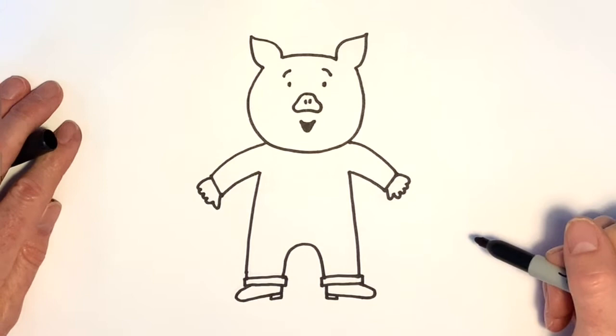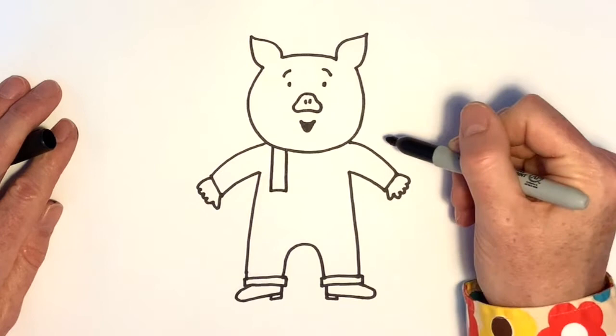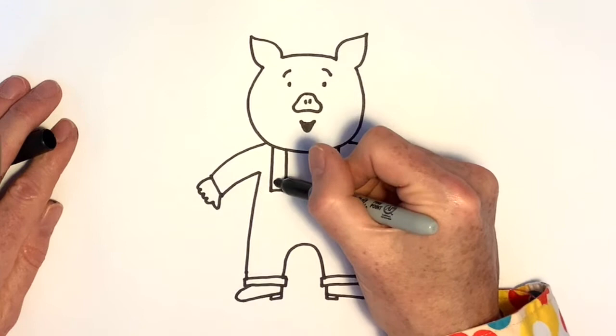So, yes, the pig's wearing dungarees, so the dungarees need some straps, two straps, like that, with buttons to hold them up. And then just draw the top of the dungarees, there.